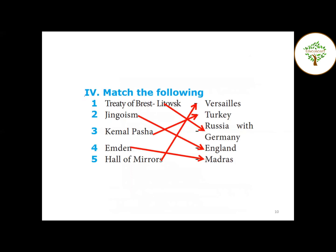Fourth Roman: Match the following. The Treaty of Brest-Litovsk relates to Russia-Germany. Jingoism is prevalent in England. Enver Pasha relates to Turkey. Submarine warfare relates to the U-boat. Hall of Mirrors is also listed as a match.